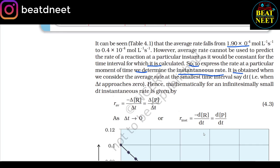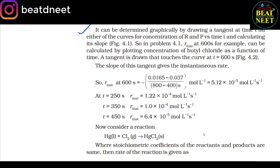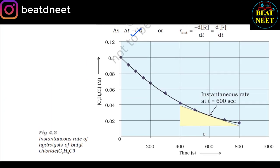The instantaneous rate is obtained when we consider the average rate at the smallest time interval dt. Mathematically, for an infinitesimally small dt, instantaneous rate is given by: R_avg = −ΔR/ΔT = ΔP/ΔT. When dt → 0, R_inst = −dR/dt = dP/dt (equation 4.3). It can be determined graphically by drawing a tangent at time t on the concentration-versus-time curve and calculating its slope. For problem 4.1, R_instantaneous at 600 seconds is calculated by plotting concentration of butyl chloride as a function of time and drawing a tangent at t = 600 s (Figure 4.2).